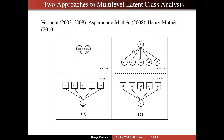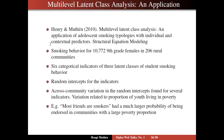Now, let's take an example of the model on the right from the applied paper by Henri and Muthien. That appeared in the journal of structural equation modeling, and it had to do with adolescent smoking typologies with individual and contextual predictors. We're looking at over 10,000 individuals in 206 communities — these are the clusters. Six categorical indicators and three classes were found describing various kinds of student smoking behavior. And random intercept variation was found for the indicators, which represents cross-community variation, particularly strong variation for certain items.